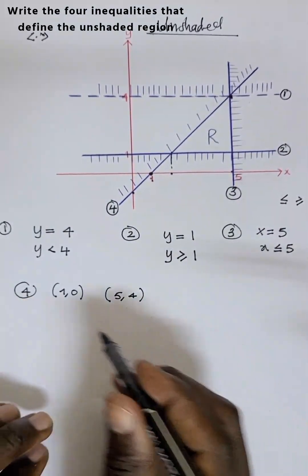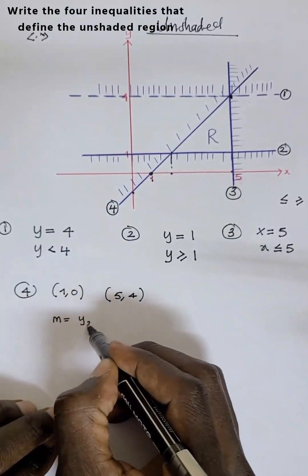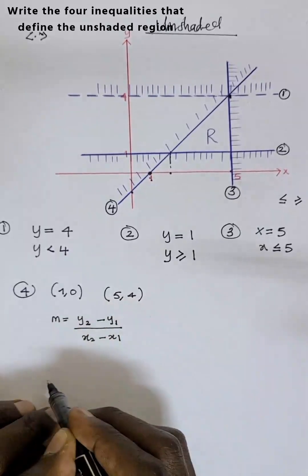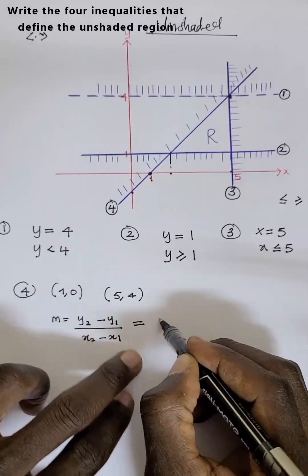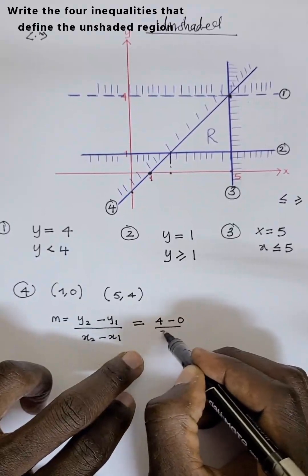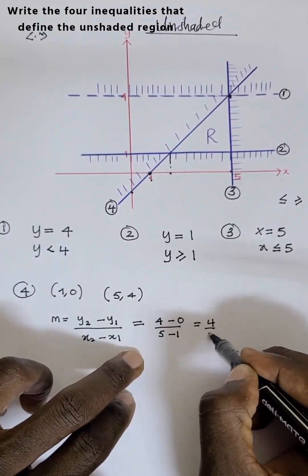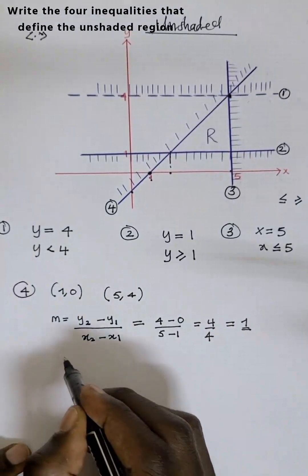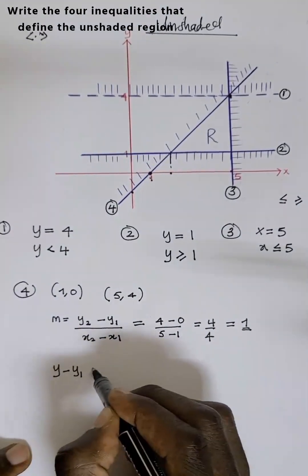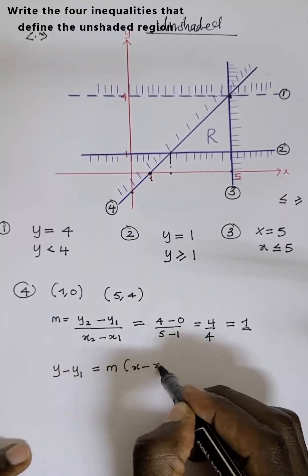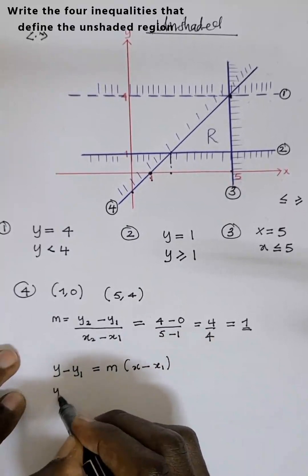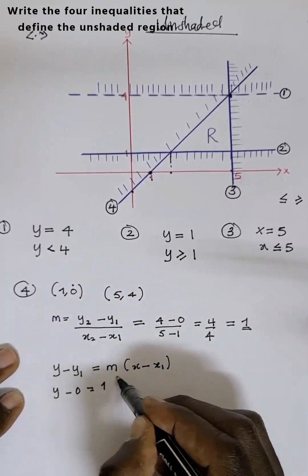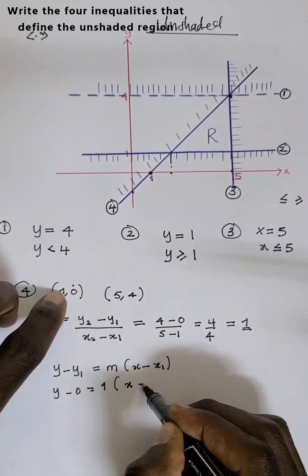Let's find the gradient: m equals y2 minus y1 divided by x2 minus x1. That gives us four minus zero over five minus one, which equals four divided by four, giving us a gradient of one. Then we use the equation of a straight line: y minus y1 equals m times open brackets x minus x1.